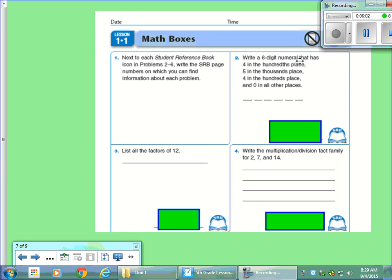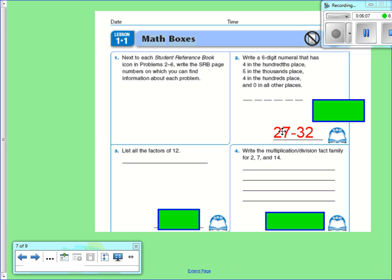Write a six-digit numeral that has 4 in the hundredths, 5 in the thousandths, and so on. Go ahead and look at page 27 to 32 in your student reference book. It'll help you out, refresh you on place value.